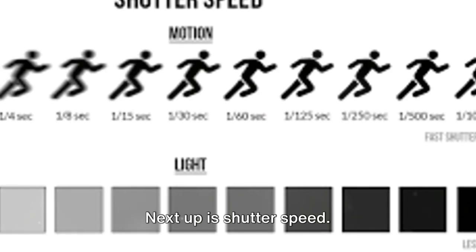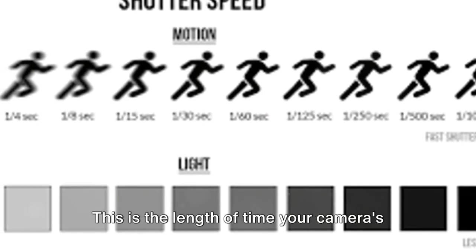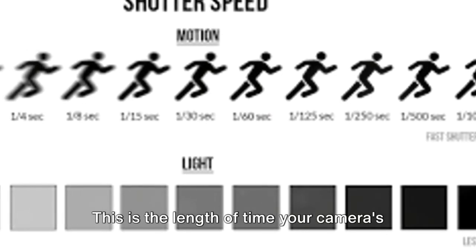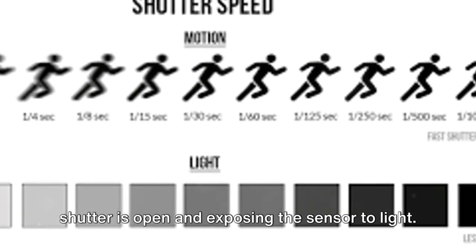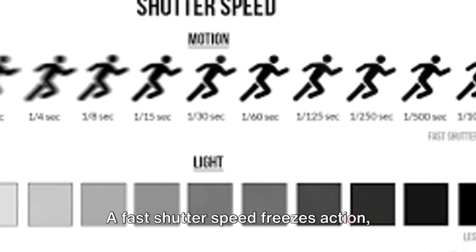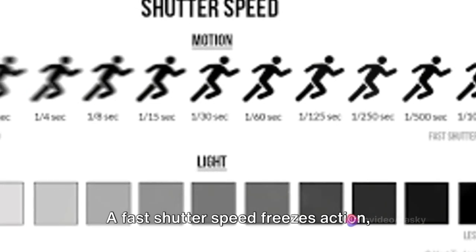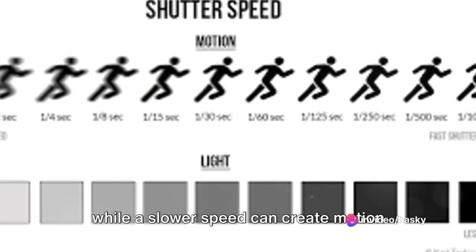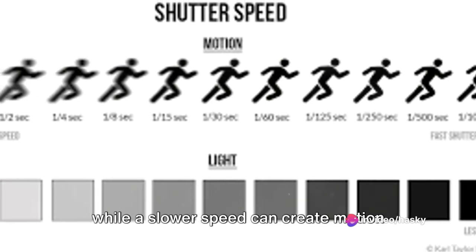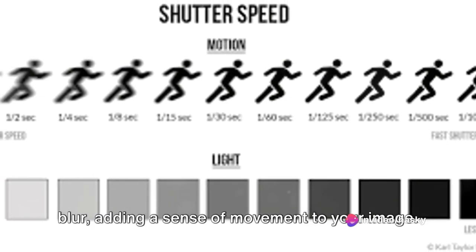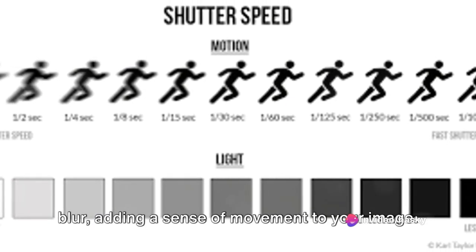Next up is shutter speed. This is the length of time your camera's shutter is open and exposing the sensor to light. A fast shutter speed freezes action, while a slower speed can create motion blur, adding a sense of movement to your image.